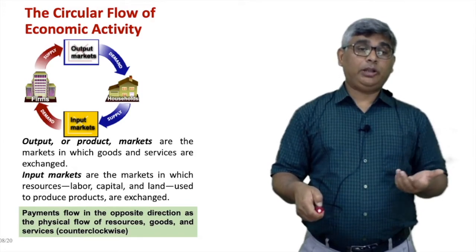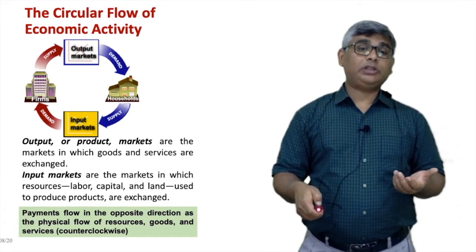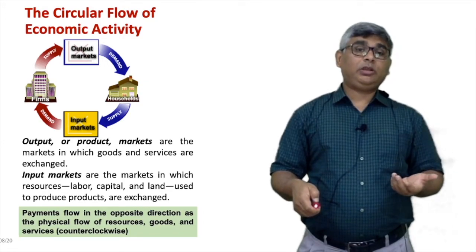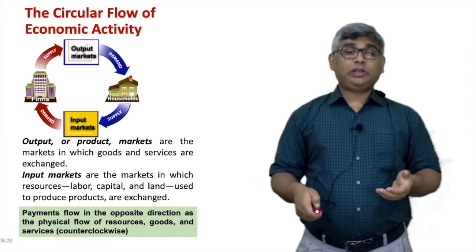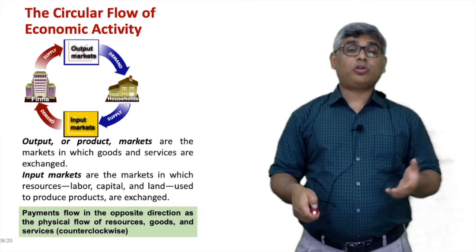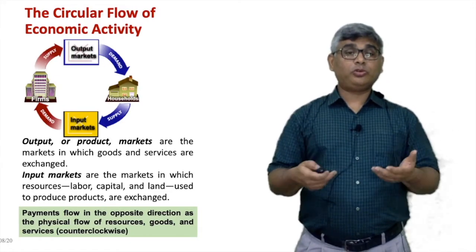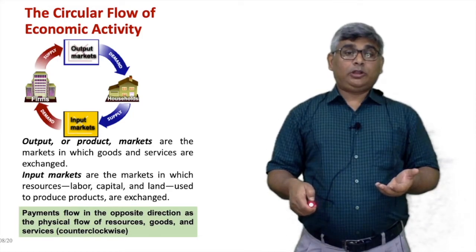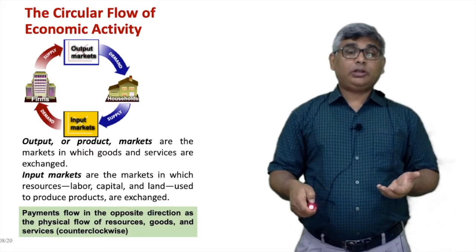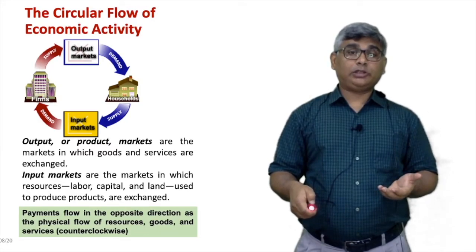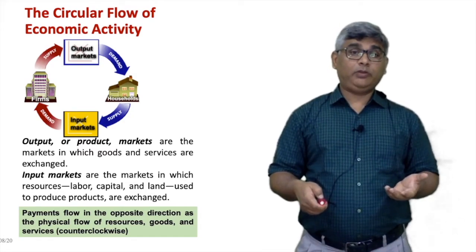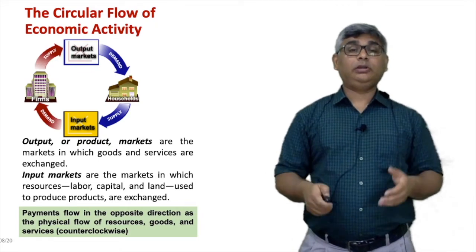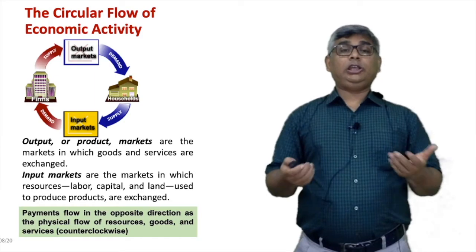Similarly, inputs from households — such as labor and raw materials — supply the input markets. Based on this, the input markets compute the demand and feed it into firms. With these inputs, firms manufacture goods in the form of supply, completing the circular flow. Input markets include labor, capital, land use, raw materials — whatever is required to produce a particular item. Importantly, while products flow in one direction, the payment flow goes in the opposite direction.